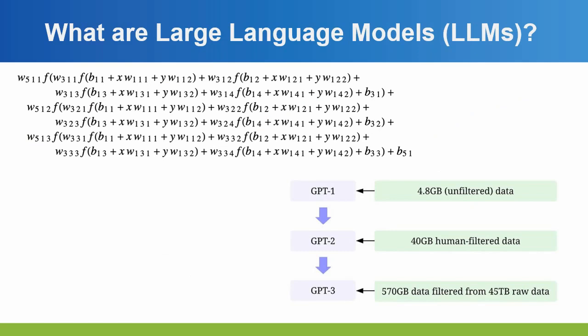ChatGPT is essentially just a huge equation with 175 billion parameters. For linear or quadratic equations there are numerical methods to get precise parameter values, but you can't do that with 175 billion parameters. So you feed it data of what you want it to look like and make adjustments. GPT-1 used 4.8 gigabytes of data, GPT-2 used 40 gigabytes, GPT-3 used 570 gigabytes. With machine learning, the amount of parameters and data needed to get a human-like response is more art than science. OpenAI fully expected 1.75 billion parameters and 40 gigs of data to work — it didn't. So they kept increasing until they got a good solution.